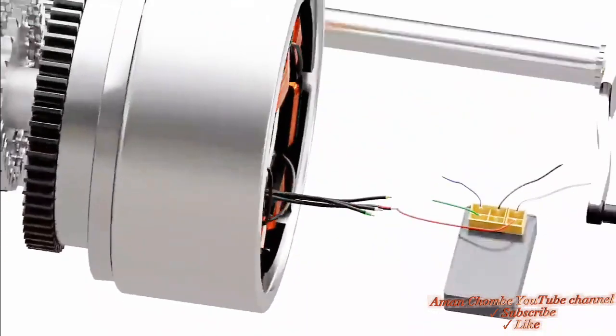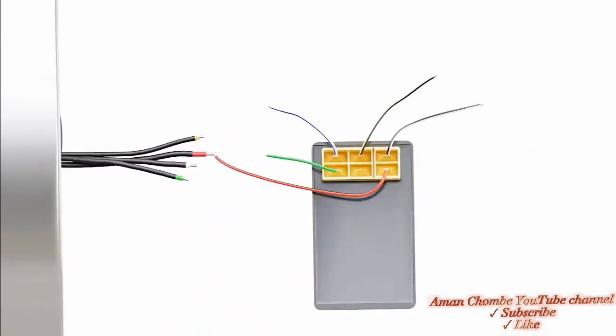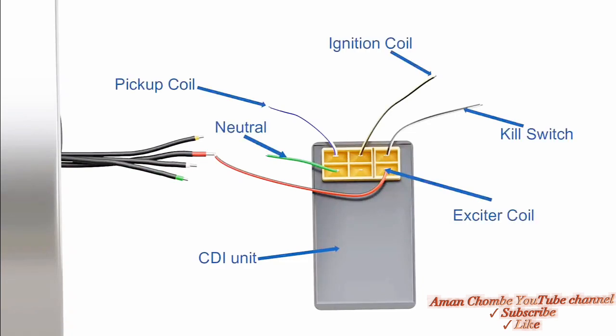This voltage is supplied to an electrical component known as the capacitive discharge ignition, or CDI unit. The connection for an AC-CDI is shown here. The primary function of the CDI unit is to store electric charge and dump the stored charge when required. A capacitor inside the CDI unit stores the electric charge.